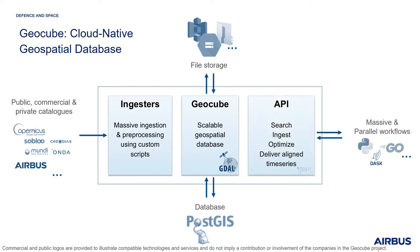An API is available to search images, optimize the database, ingest new images, and deliver aligned time series for massive and parallel workflows in standard languages such as Python or Golang, and parallel computing libraries such as Dask.